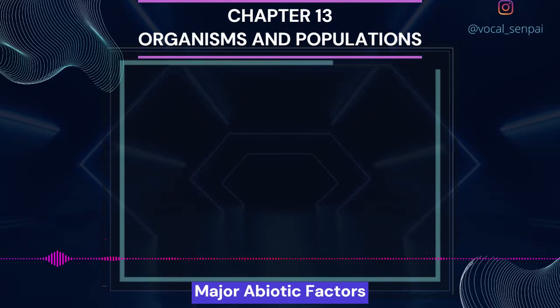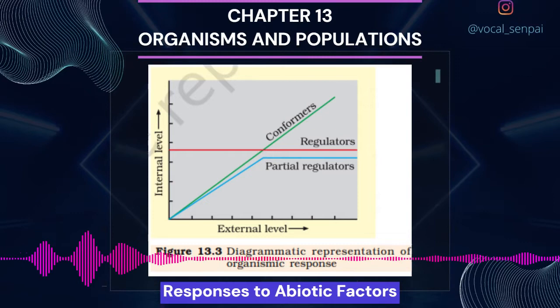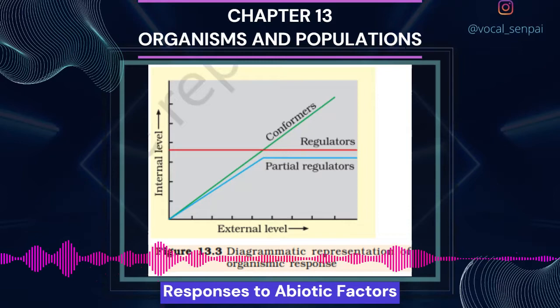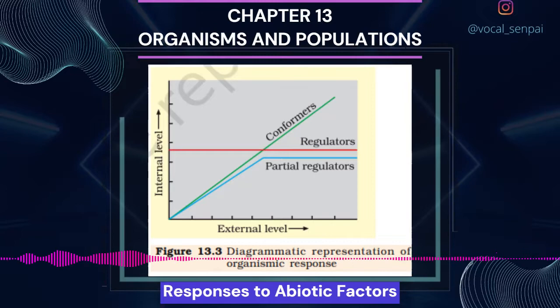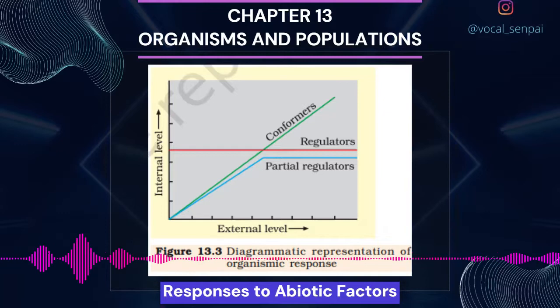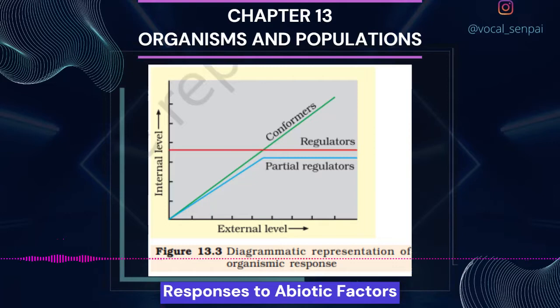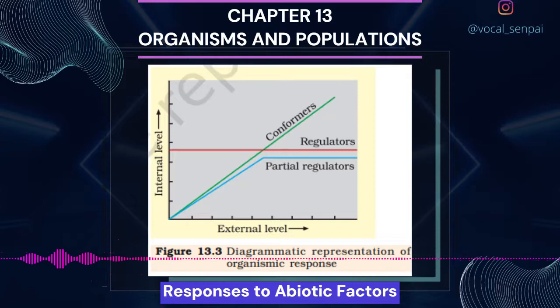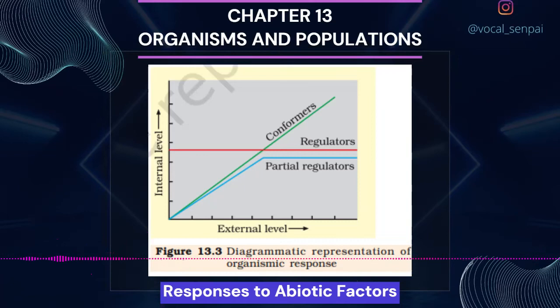How do organisms living in habitats with drastically varying abiotic conditions cope with stressful conditions? Over millions of years, many species have evolved a relatively constant internal environment that permits all biochemical reactions and physiological functions to proceed with maximal efficiency, enhancing the overall fitness of the species. This constancy — in terms of optimal temperature and osmotic concentration of body fluids — is maintained despite varying external conditions through a process called homeostasis.